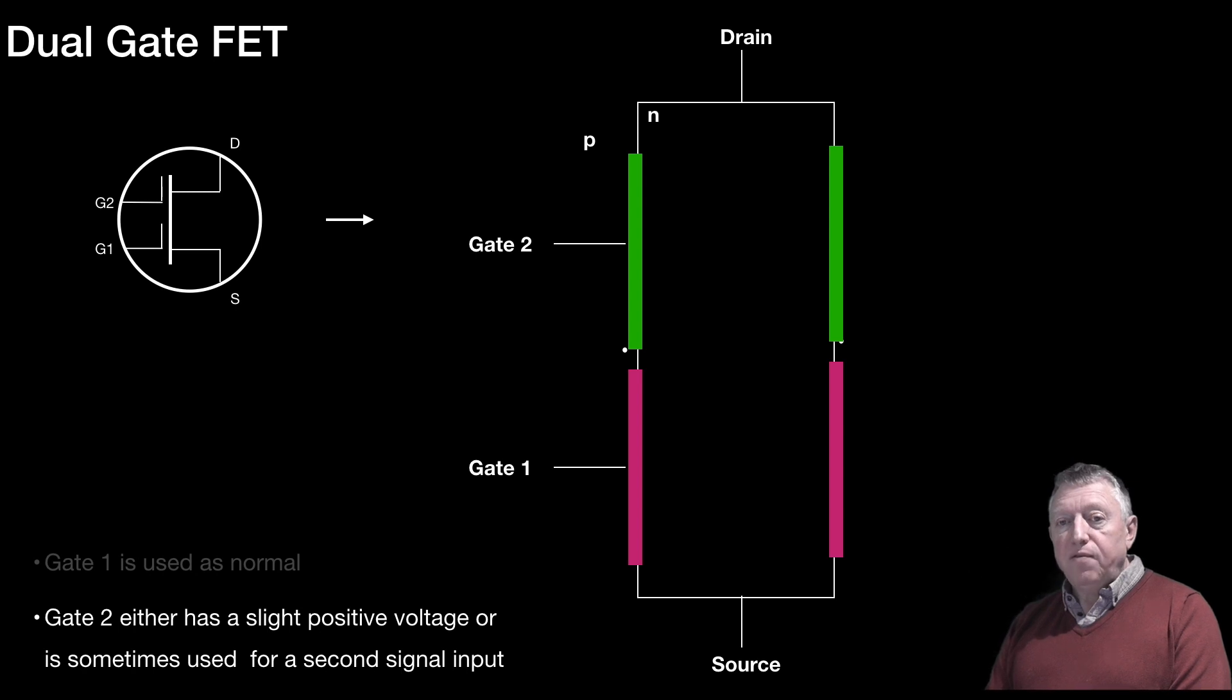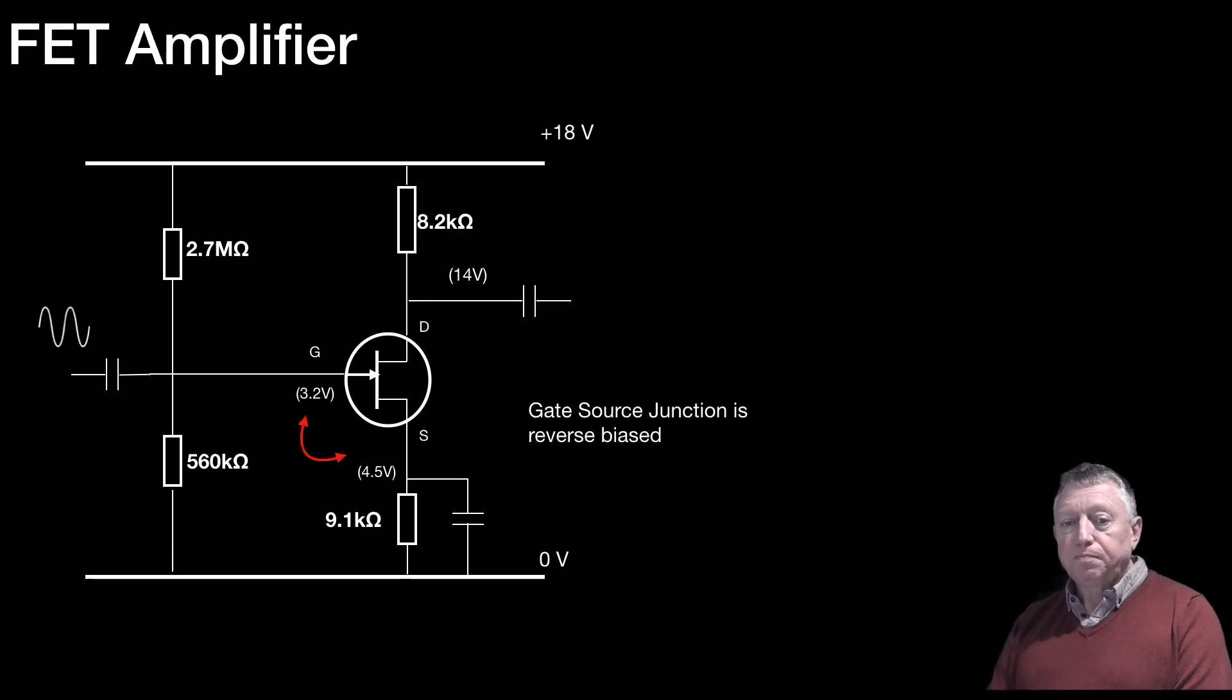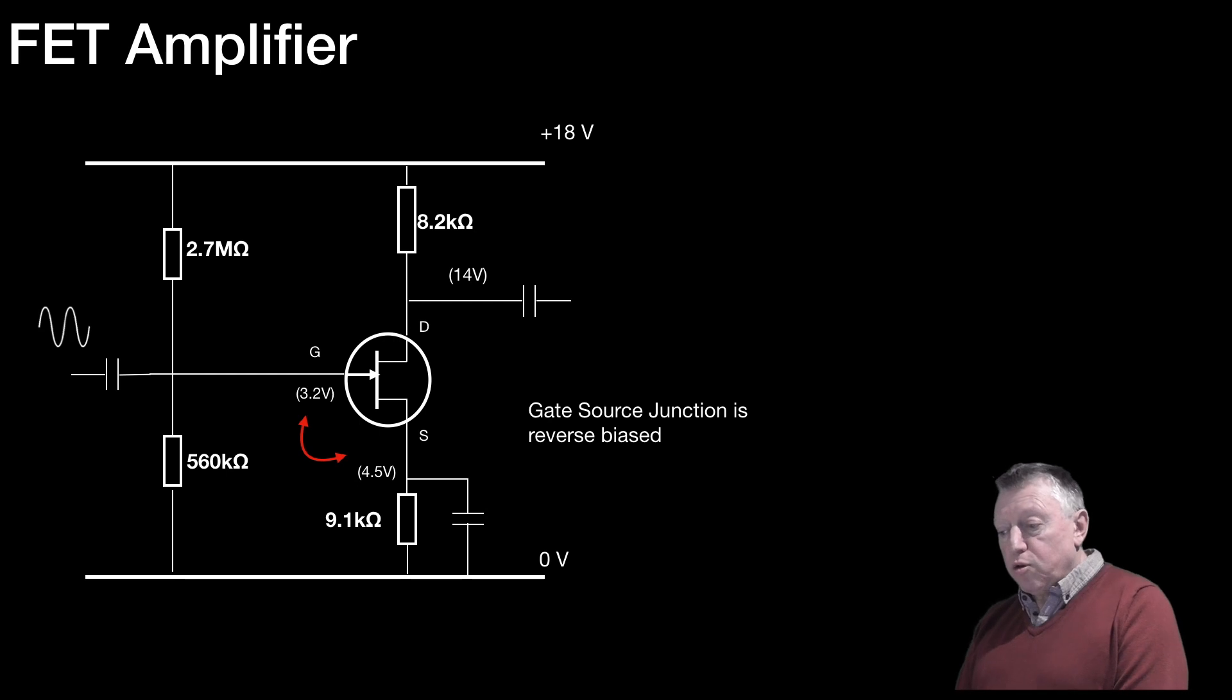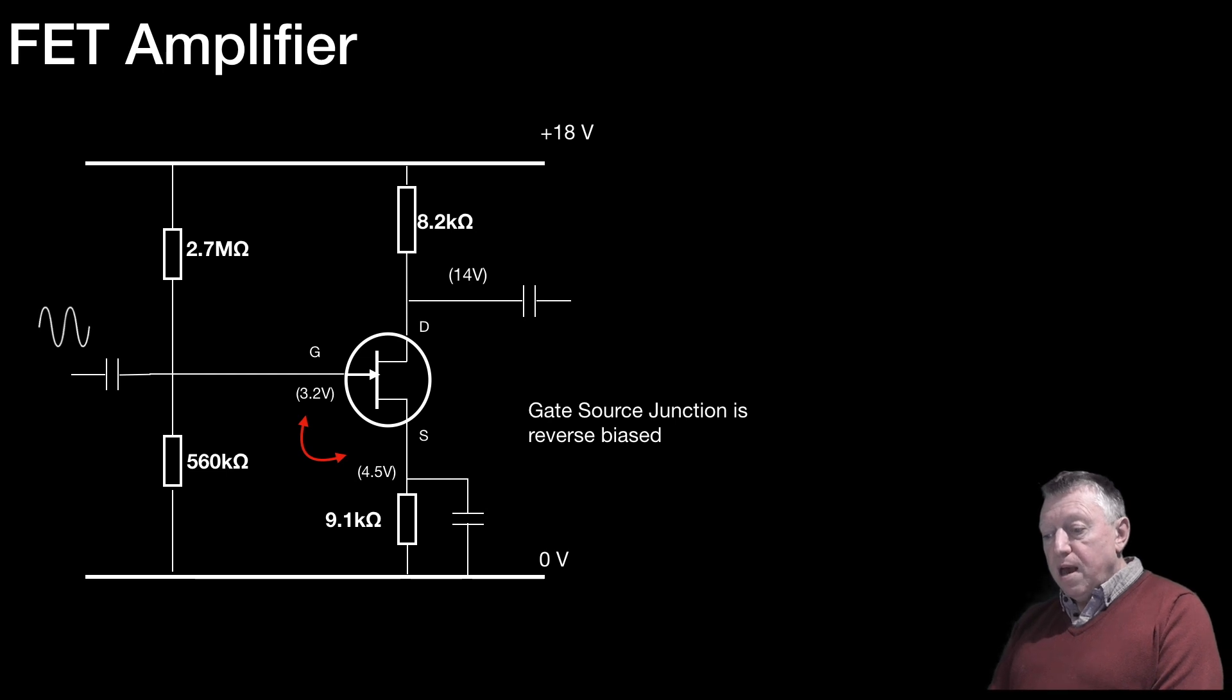So, let's have a little look at an FET amplifier. There, on your screen, you have an FET amplifier. And the gate-source junction, you will notice, is reverse-biased. The voltage on the gate is 3.2 volts, and the voltage on the source is 4.5 volts. So, it's reverse-biased.